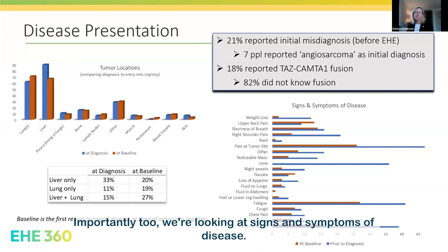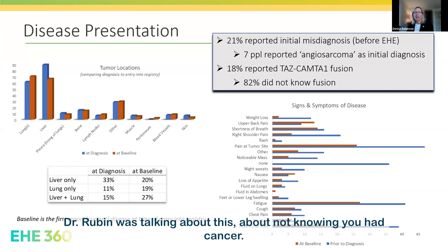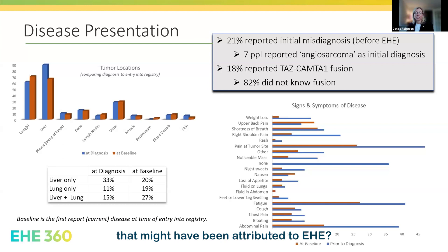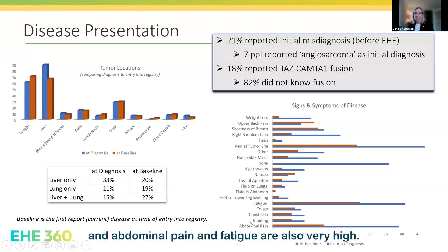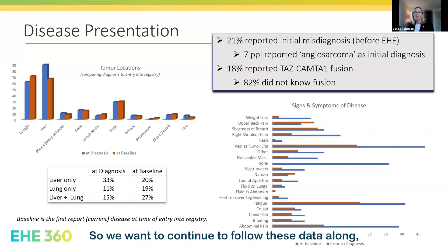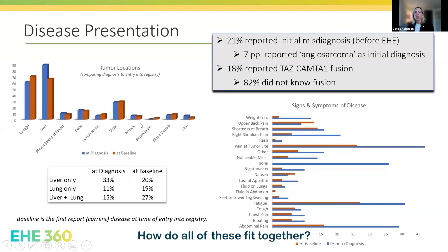We're looking at signs and symptoms of disease. We ask people what signs or symptoms they had prior to diagnosis, referencing the concept of incidental finding discussed by Dr. Rubin. We also ask at baseline what their current signs and symptoms are. Pain at the tumor site remains very high, and abdominal pain and fatigue are also very high. In the 'none' category, many people reported no signs or symptoms they thought were associated with EHE prior to diagnosis. We want to follow these data to see how signs and symptoms correlate with tumor locations, tumor changes, and treatments reported.